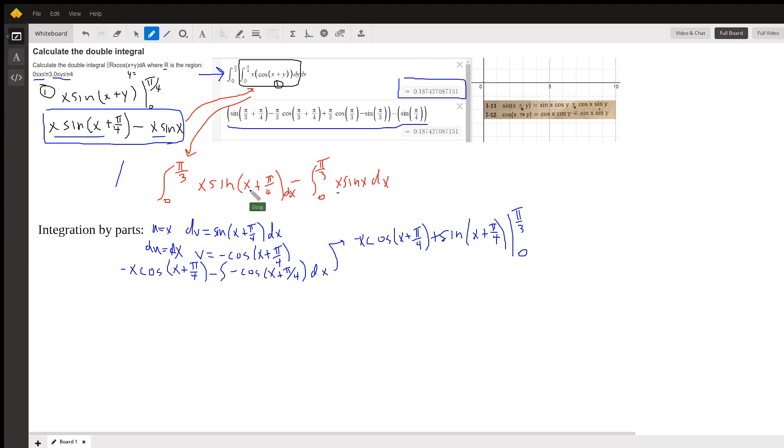We'll do integration by parts over here also. So if we let u equal x and dv equal the sine of quantity x plus pi over 4 dx, then du equals dx, v equals the anti-derivative of the sine of x plus pi over 4, which is the minus cosine. And then using the integration by parts formula, u times v, x times a negative cosine, minus the anti-derivative of v du.